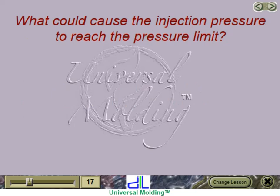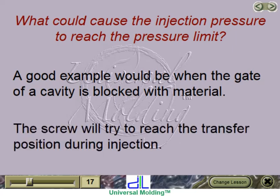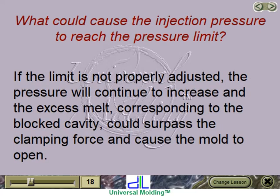What could cause the injection pressure to reach the pressure limit? A good example would be when the gate of a cavity is blocked with material. The screw will try to reach the transfer position during injection. If the limit is not properly adjusted, the pressure will continue to increase and the excess melt, corresponding to the blocked cavity, could surpass the clamping force and cause the mold to open.